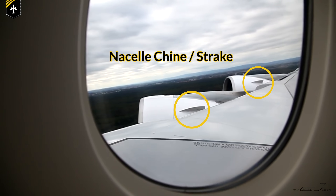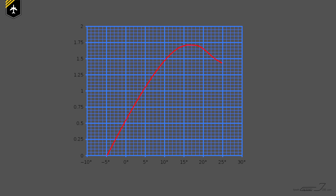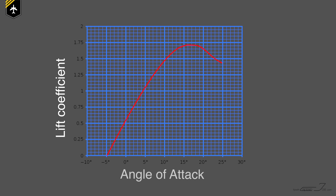To understand what it's good for, we're going to have to look at this chart right here. What you see here is the lift coefficient relative to the angle of attack, and we need to interpret this chart to understand what the strake is good for. So what is the angle of attack?